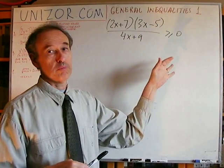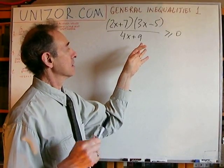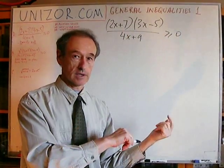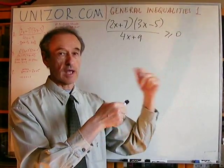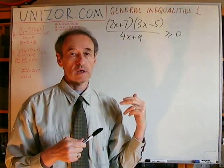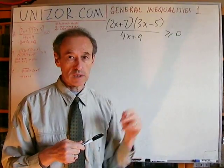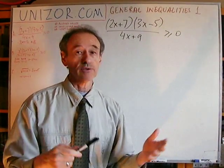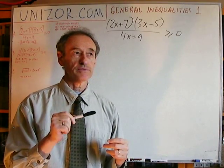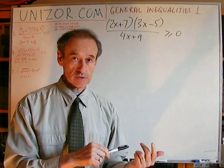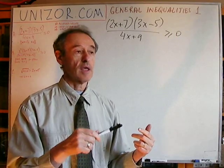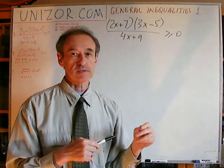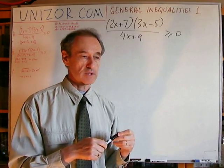Well, number one: when everything is positive or non-negative. Then, when two of the participants are negative and one is positive, because negative times negative gives you positive. So if you have two negative components among these three, the result will be positive. More generally, if you have an even number of negative values among all the components being multiplied and divided, then the result will be positive. So we really have to check when particular components of this expression are changing signs.